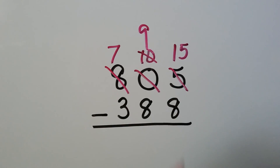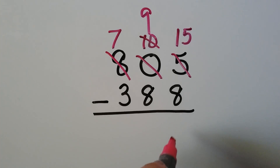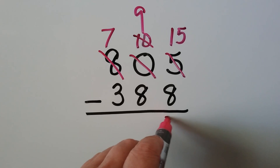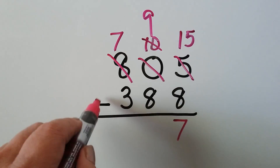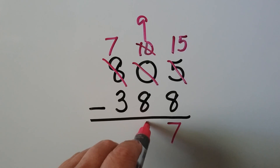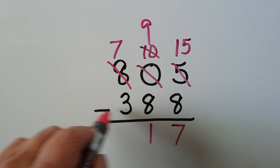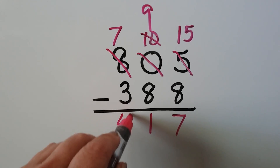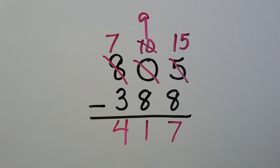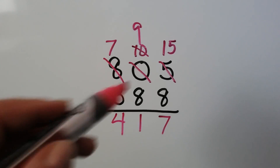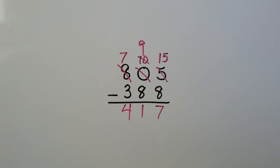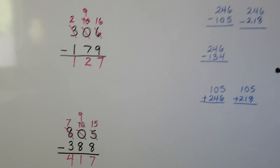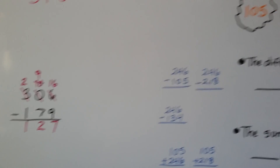15 take away eight — that would be a seven. Nine take away eight — that's an easy one, it's a one. And seven take away three is a four. We have 417. So we had to regroup a couple times, but it's no different than regrouping once — you're just doing it again. It's not harder, it just takes a little longer.